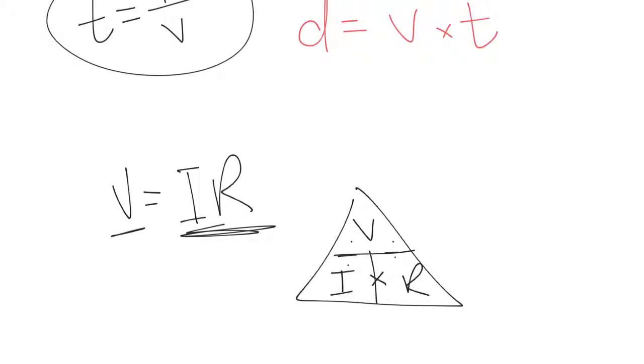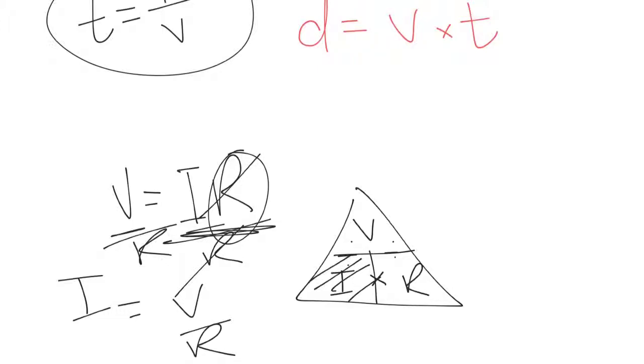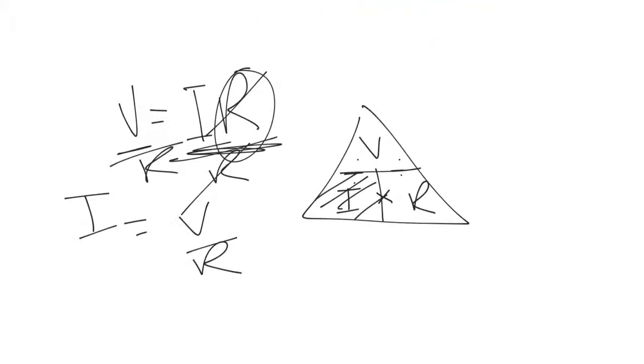And then we can just check it. If we rearrange on the left-hand side to get I, we're going to divide both sides by R. To make it V over R, and the R's will cancel, leaving I equals V over R. Is that what we get? We get I covered over equals V over R. So it does work. So that's formula triangles.